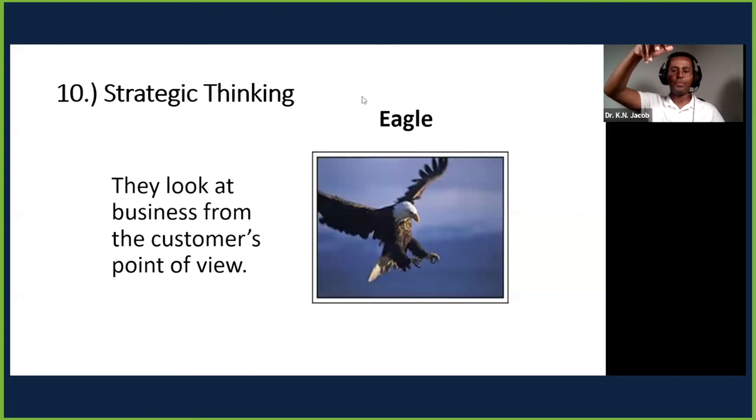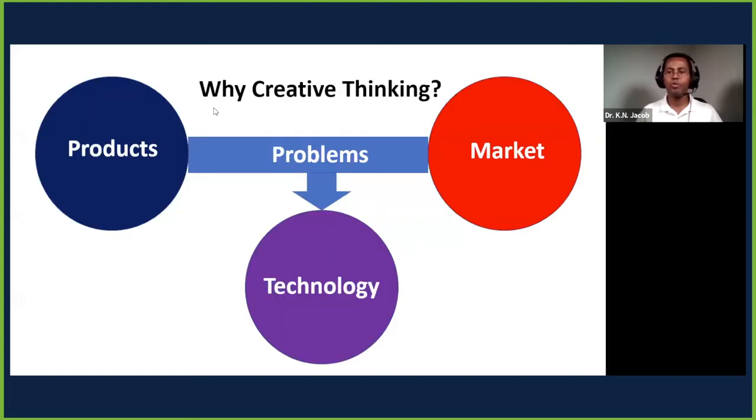On your screen, I have brought three arguments for creative thinking. One: the market is always changing. Two: the products need to change—products are also changing. In any single industry, the market is changing. If you don't change, the market will change you or you become obsolete. New products are coming all the time. And technology is always changing.